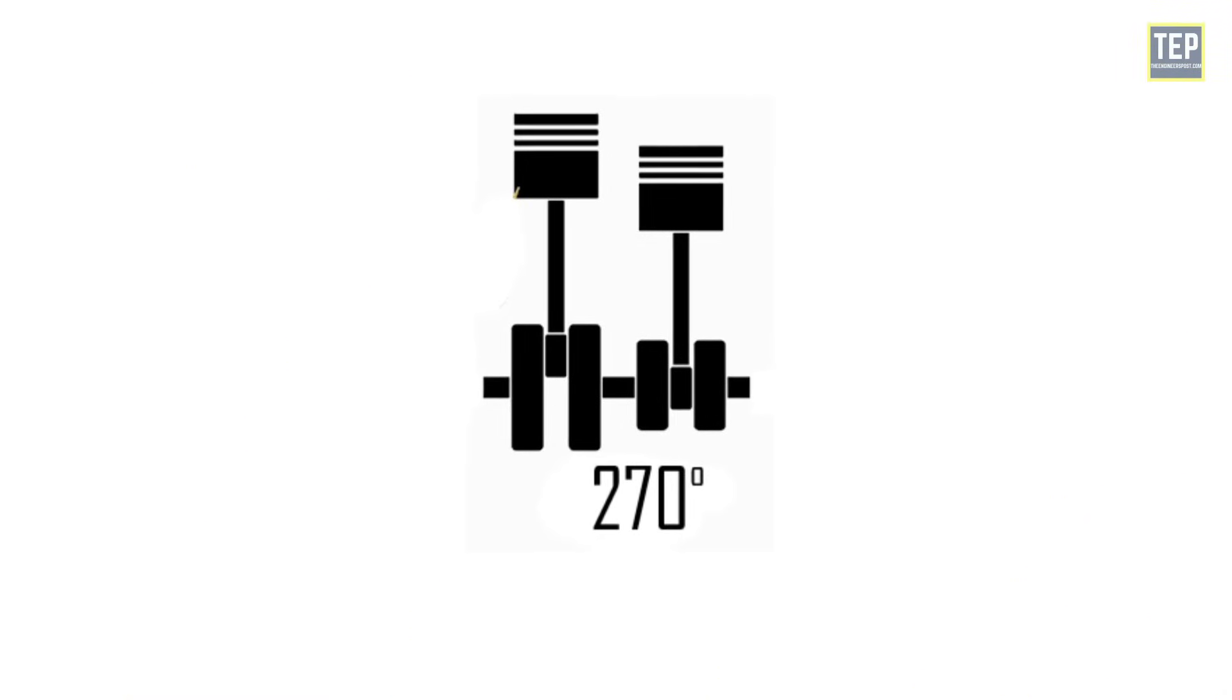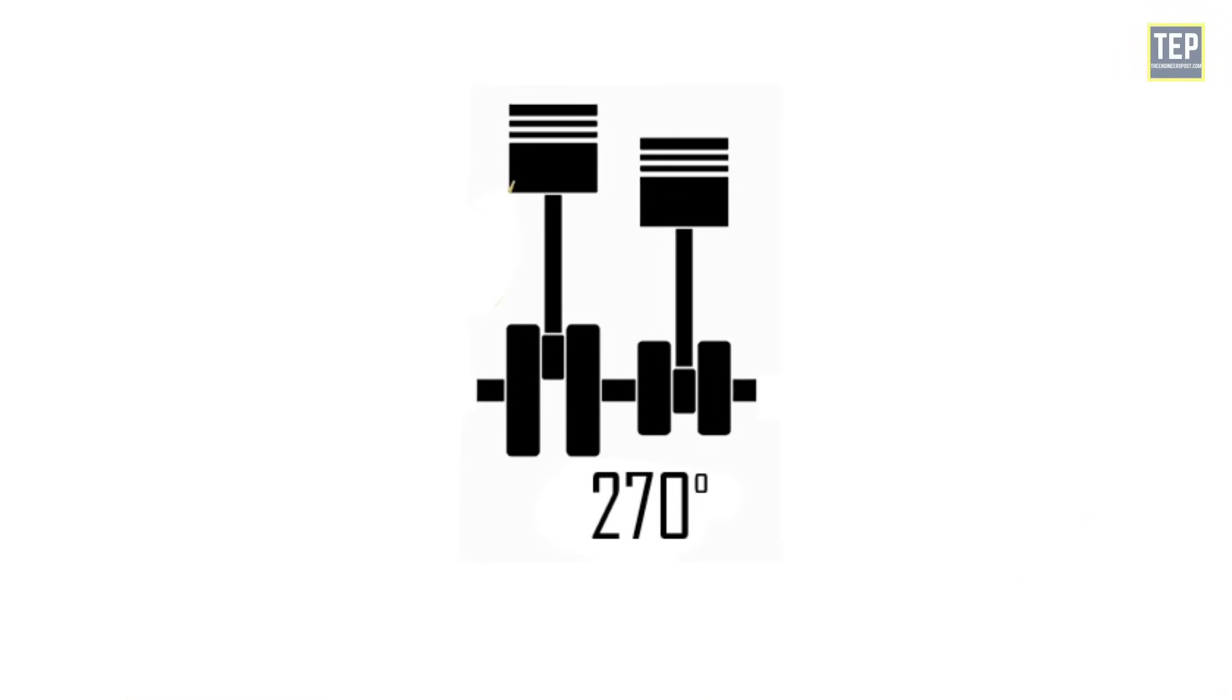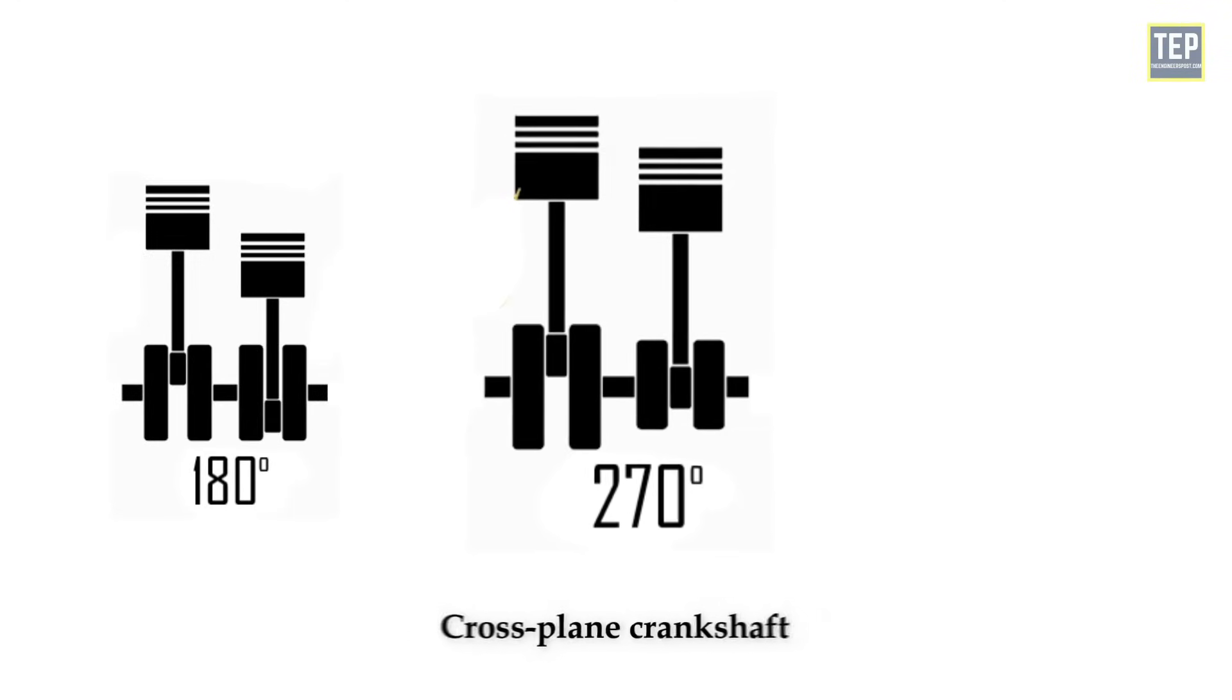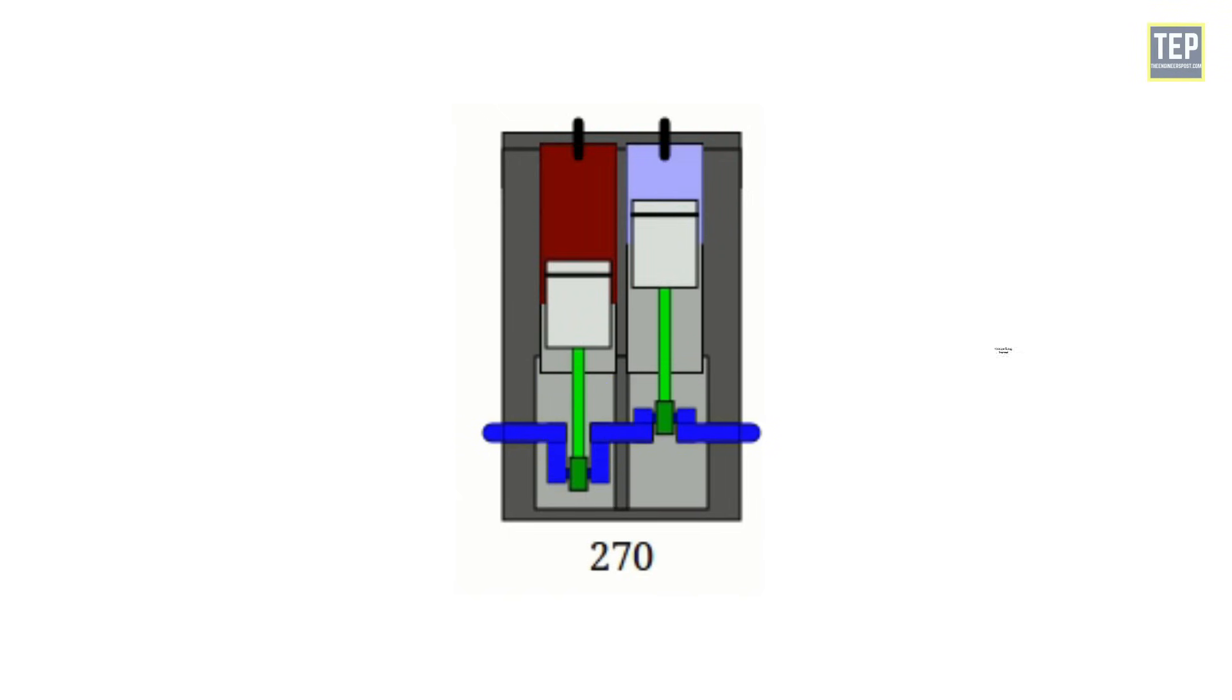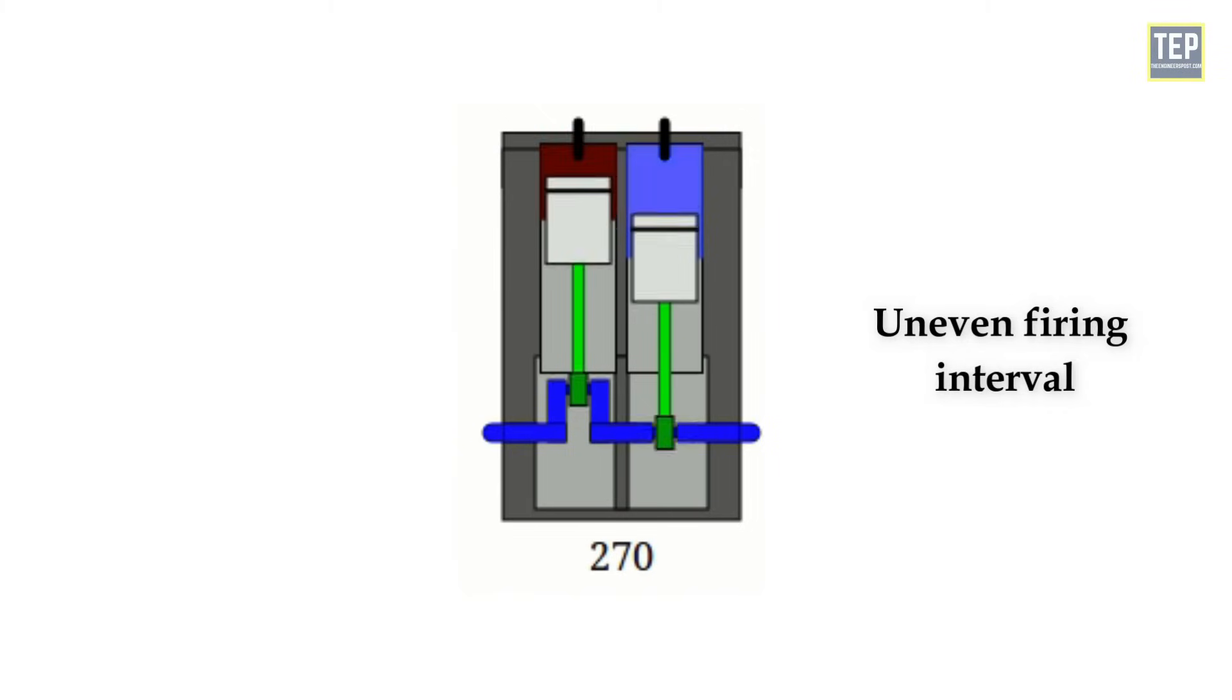Going into a 270-degree application, or what others refer to as a cross-plane crankshaft, just like the 180-degree parallel twin, both pistons are situated side by side. However, as one piston goes down, the second piston follows suit three-quarters of a rotation behind. This also results in an uneven firing interval.